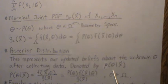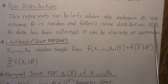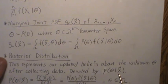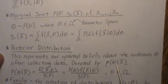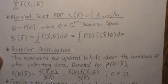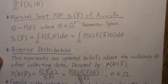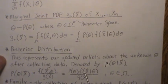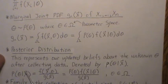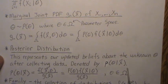The posterior distribution represents our updated beliefs about the unknown parameter theta after collecting data, and we denote it by P of theta given X. The prior was just P of theta, but now we've collected data and we want to know about theta. Using probability theory, the probability of theta given X is the joint probability divided by the likelihood function divided by the marginal of X. This is how we calculate the posterior distribution, where theta is random and lives in the parameter space Omega.